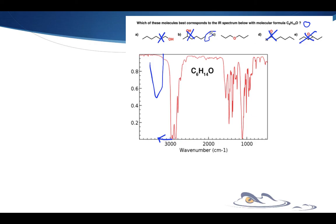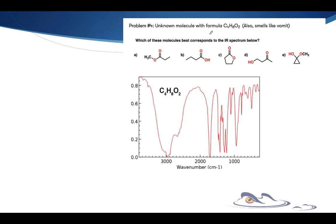Did you get that? How about one more and we'll call it a day. Go ahead and hit pause, work that one out. Looking at the index of hydrogen deficiency: 4 times 2 is 8, plus 2 is 10, minus 8, divided by 2 — that's 1. So it has an index of hydrogen deficiency of 1. One option has two degrees of saturation, so that one's out.